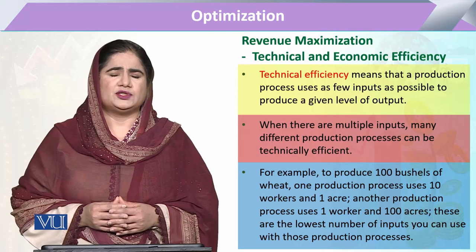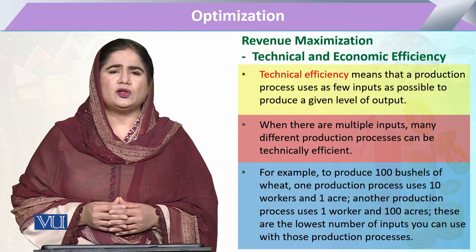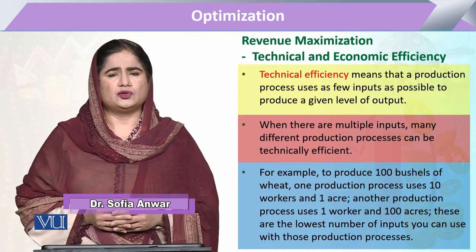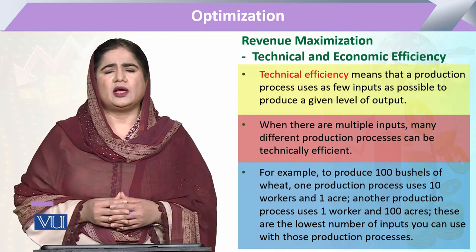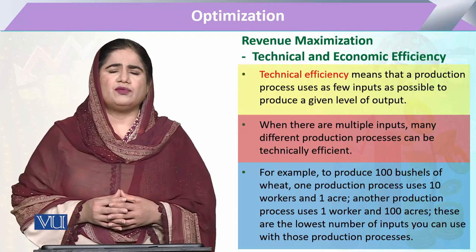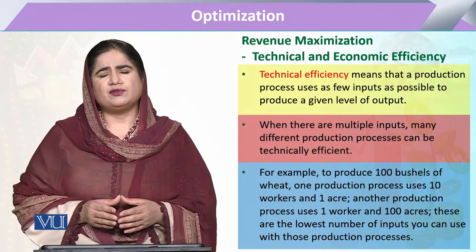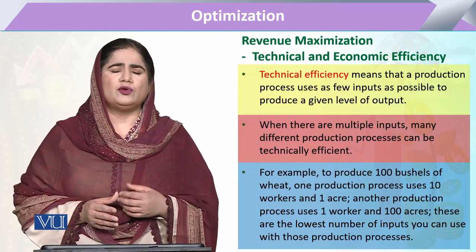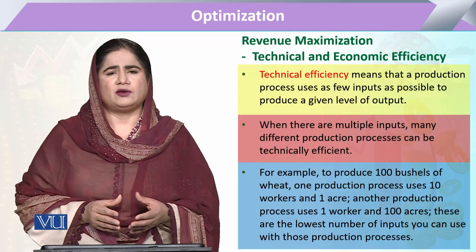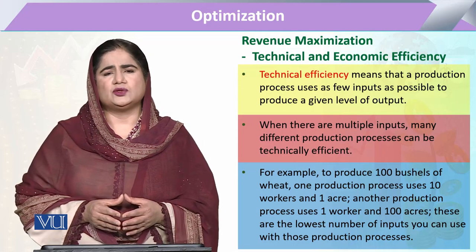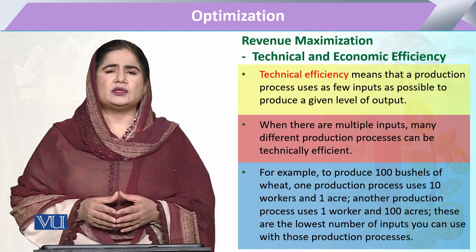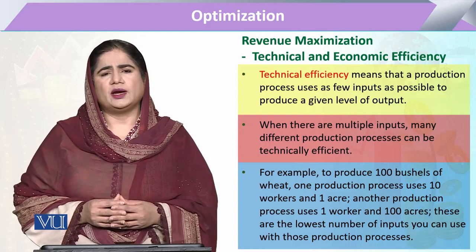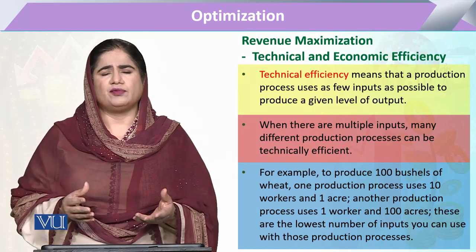Technical efficiency is particularly related to only the production concept — the total amount of output produced by a resource. If we compare various levels of output produced by various factors of production, whichever factor produces more units of output, we call that resource technically efficient. When a combination of resources is utilized in a production function, we can compare which production function is more technically efficient, as there can be various levels and forms of production functions.